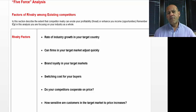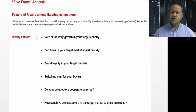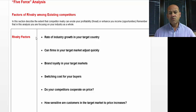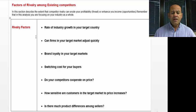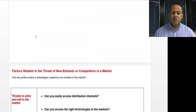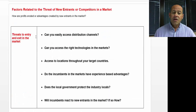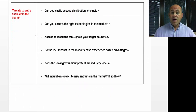A five-force analysis deals with these five factors. The first factor is called rivalry — rivalry factors. These are really factors that involve rivalry among existing competition. Then we go to threats to entry and exit within a market.